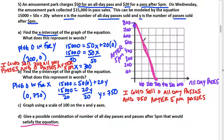If I'm going to pick a point on my line, maybe I'll try this point right here. That would be 100 all-day passes and 500 passes after 5 p.m. So that would be when X is 100 and Y is 500. But I have to make sure that it actually works in the equation.